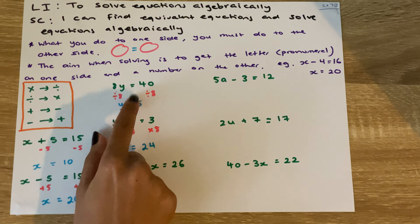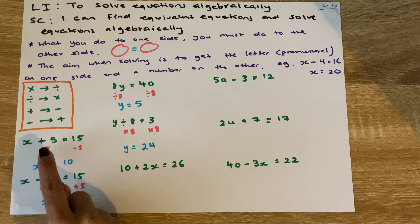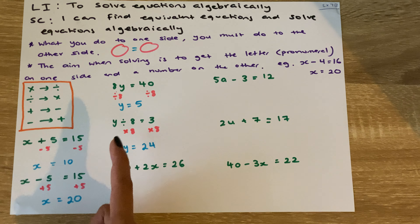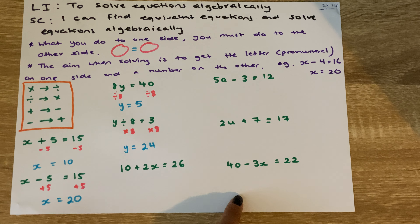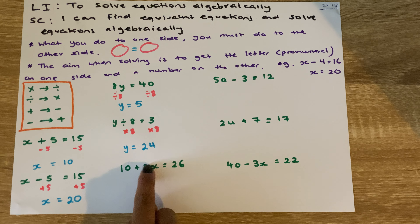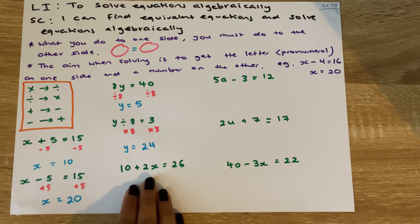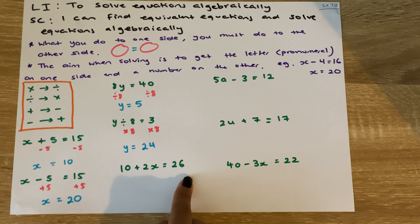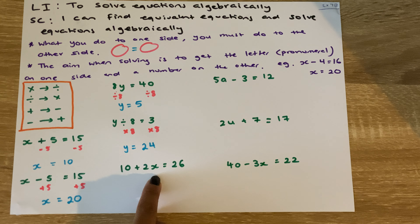These four questions we've gone through involve just one step — we just have to divide, times, subtract, or add one number. What you'll notice about the next four questions is there are two things: something joined with the x, and a thing on its own. When we do these, we're still aiming to keep our letter on one side and our numbers on the other. The way I like to approach them is to look at what's not with the letter first.